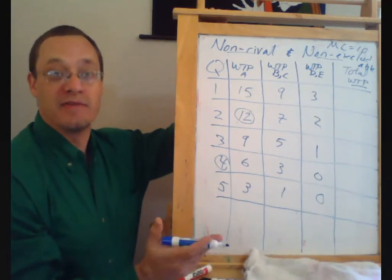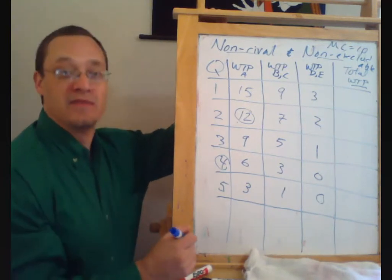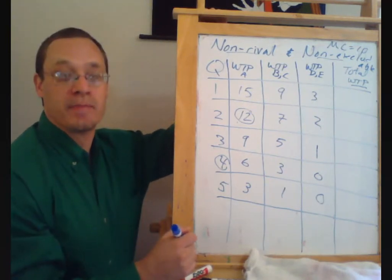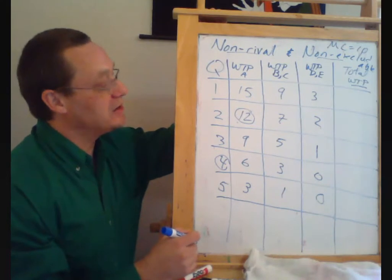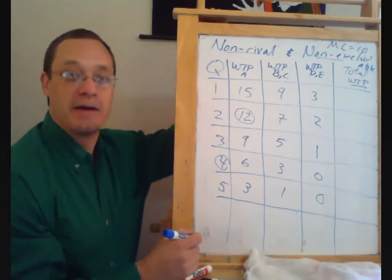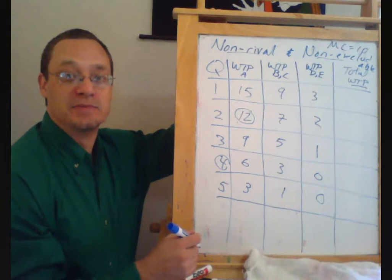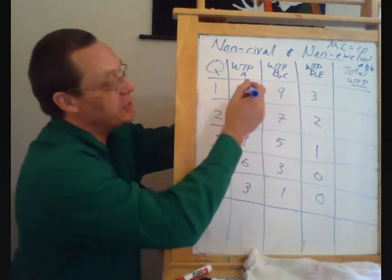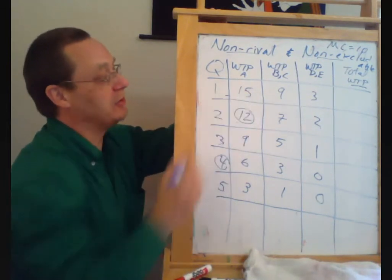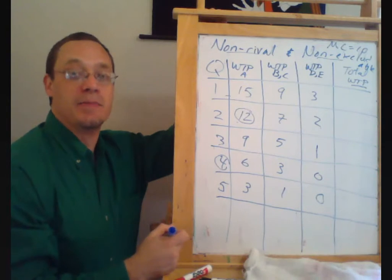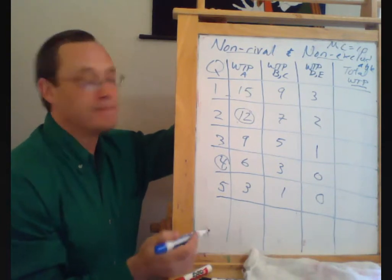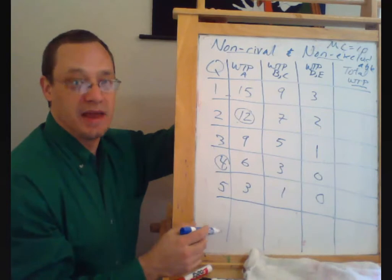So I'm going to have an example here, and I'm going to think about five different people living on a street, and they don't have any street lights right now, but they're going to think about having some street lights. And I've put down their incremental or marginal willingness to pay or marginal benefit from the number of street lights that they have.